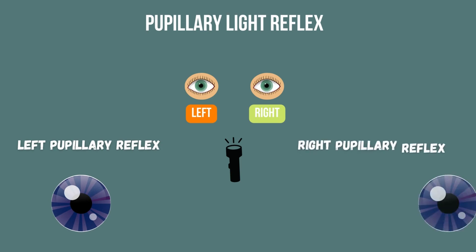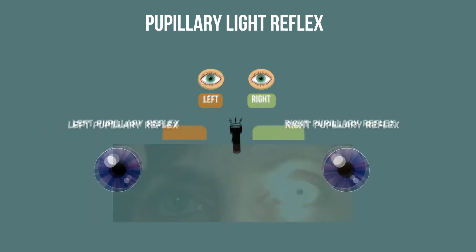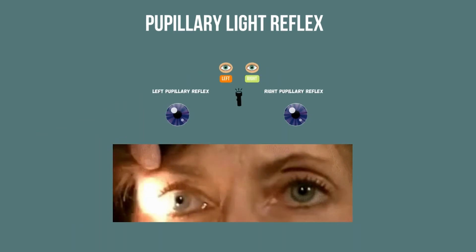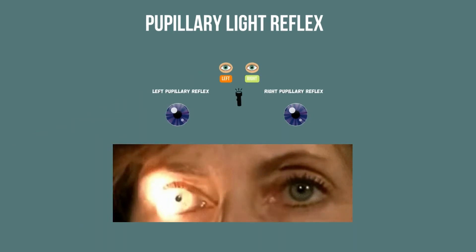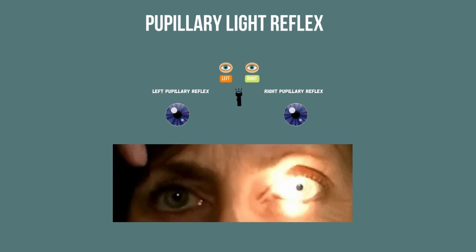Right pupillary reflex means the reaction of the right pupil, whether light is shown into the left eye, right eye, or both eyes. Remember, when light is shown into only one eye and not the other, it is normal for both pupils to constrict simultaneously.